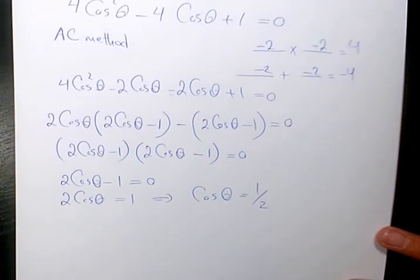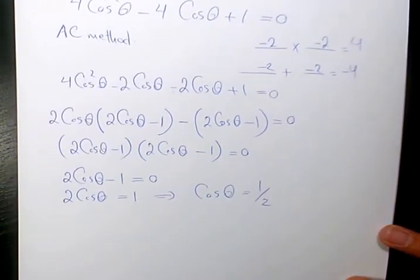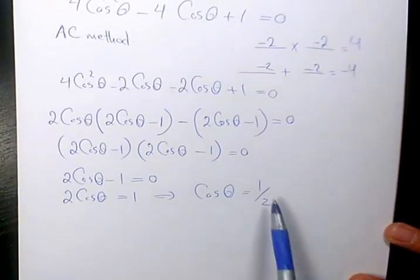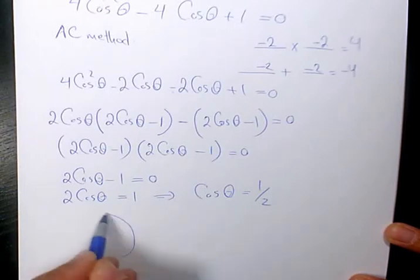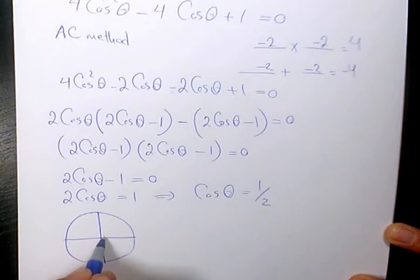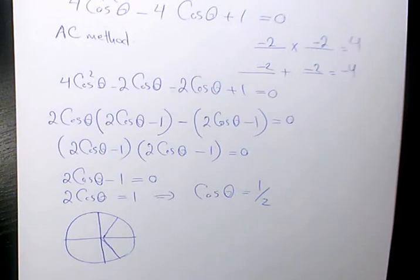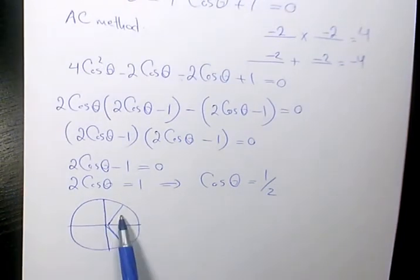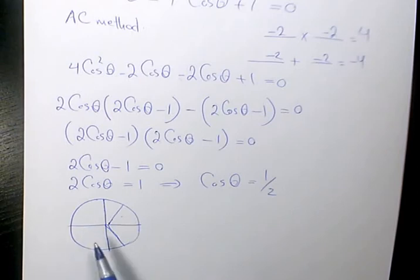Now I want to show you what kind of theta values is going to give you 1 over 2. So if you consider this circle, in quadrant 1, in quadrant 4, cosine is positive, based on the CAST rule. You remember in CAST rule, quadrant 1, cosine is positive, cosine is negative in 2, cosine is negative here, and finally in quadrant 4, cosine is positive as well.